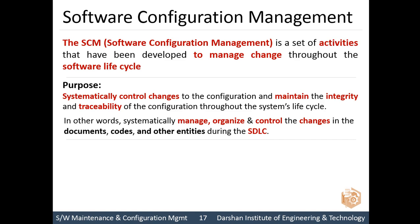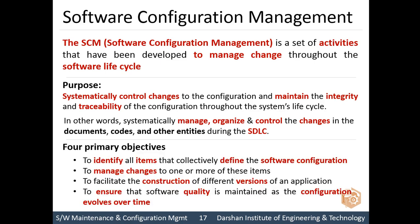The main purpose of software configuration management is to systematically control changes to the configuration and maintain the integrity and traceability of the configuration throughout the system's lifecycle. The first of four primary objectives is to identify all the items that collectively define the software configuration — whether it is a class file, a script file, or a project file — so we can identify each as a software configuration item.